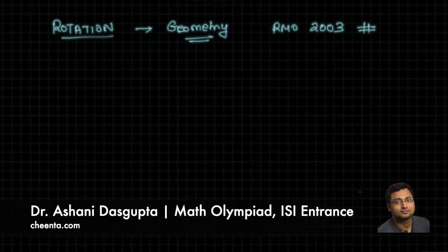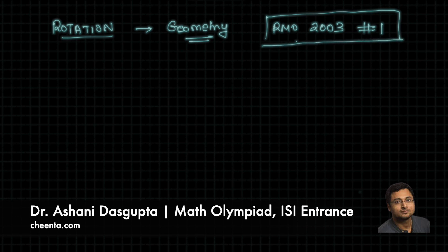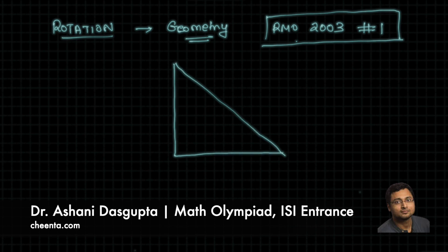This is problem number one. It's a problem from a math Olympiad in India. To get started, let me tell you what the problem says. We have a triangle, an isosceles right-angled triangle. Angle A is 90 degrees and AB is equal to AC. This is given.